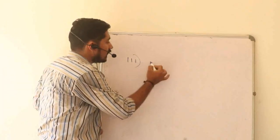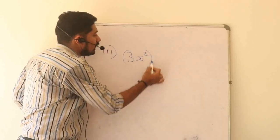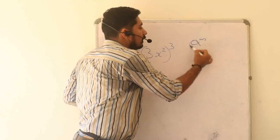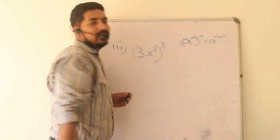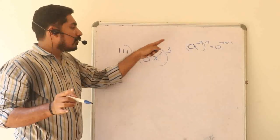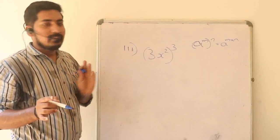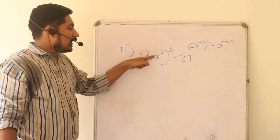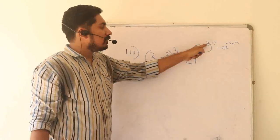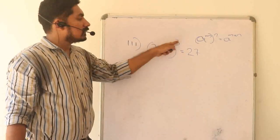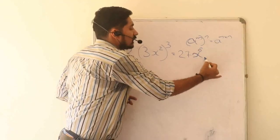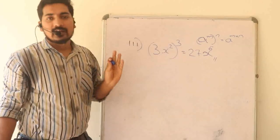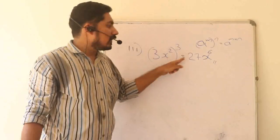Third question: 3x squared, all cubed. We apply Rule 3. 3 cubed is 27, and x squared all cubed gives x raised to 2 into 3, which is x raised to 6. So the answer is 27x raised to 6. This is the third rule in action.